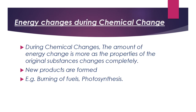During chemical changes, the amount of energy change is greater compared to physical changes, because the properties of the original substances change completely and new products are formed. For example, during the burning of fuels, a large amount of energy is released, which is used to cook food and run automobiles. Another example is the process of photosynthesis, in which plants use sunlight as a source of energy to prepare food for themselves — here the amount of energy change is more.